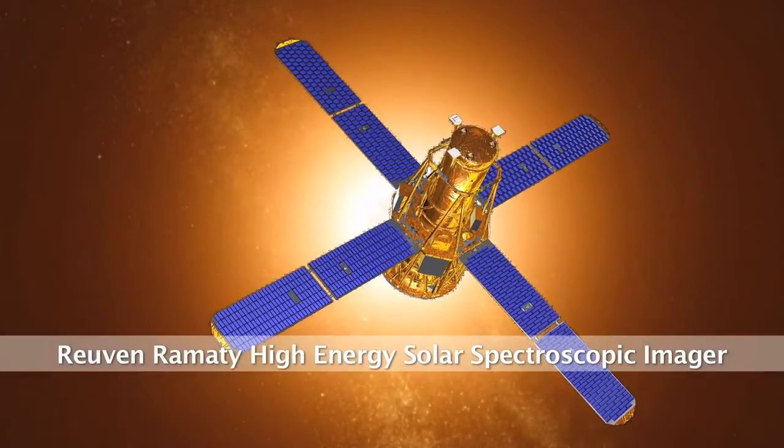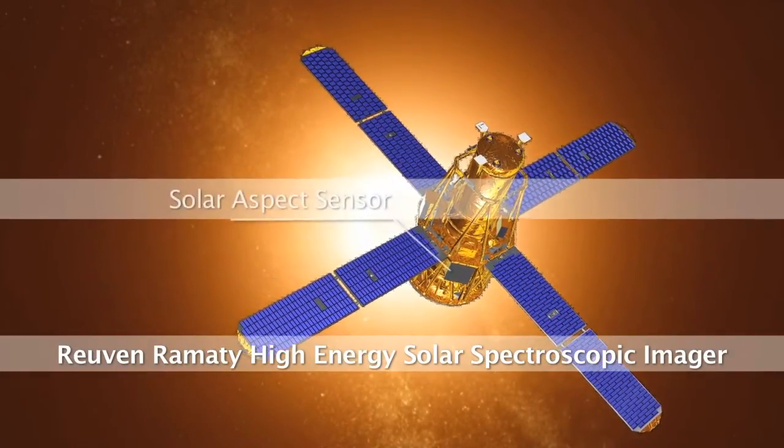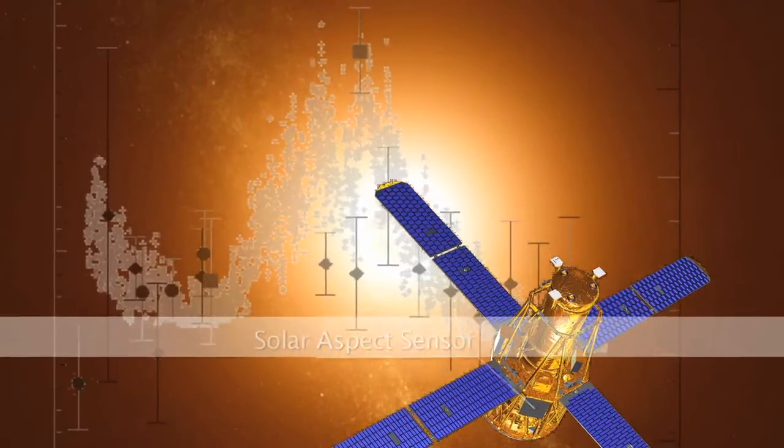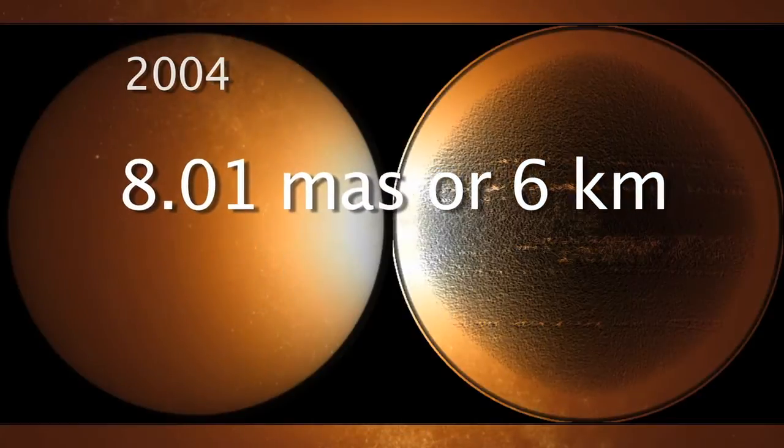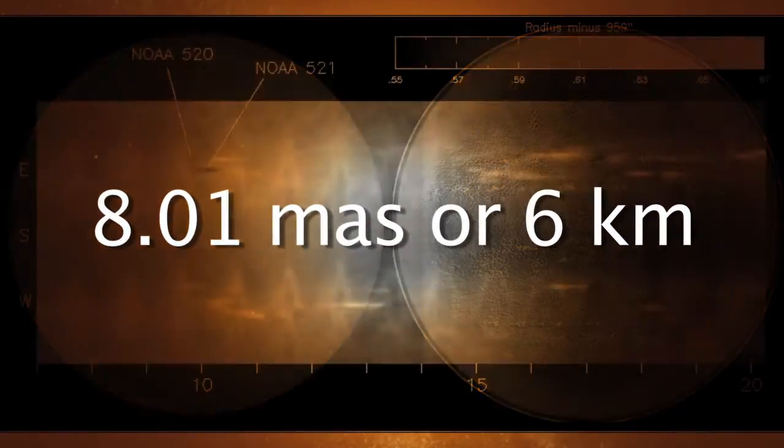Secondly, comes the RHESSI satellite with its SAS instrument. The measures of solar oblateness obtained, dating from 2004, are of 8.01 milliarcseconds after correction of the superficial magnetic effects.